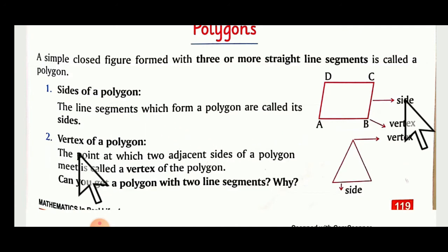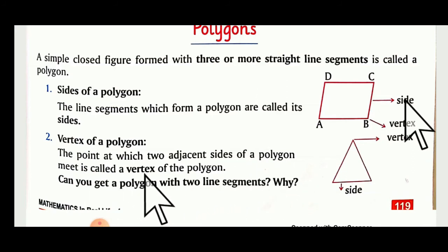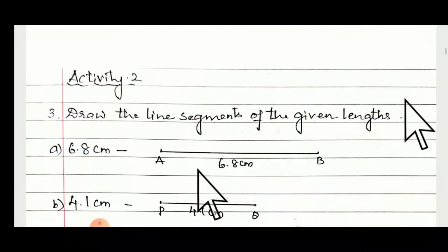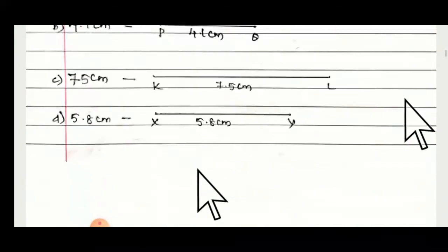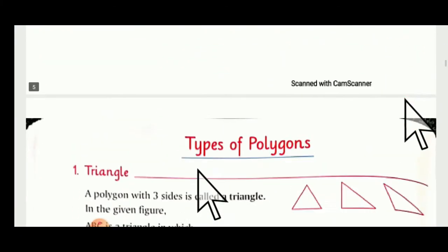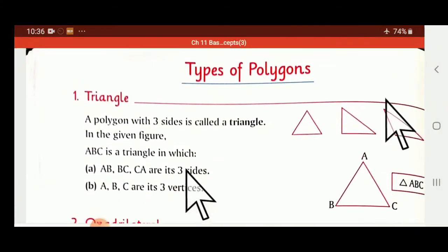What is a vertex of a polygon? The point at which two adjacent sides of a polygon meet is called a vertex of the polygon. Polygon concepts are done.